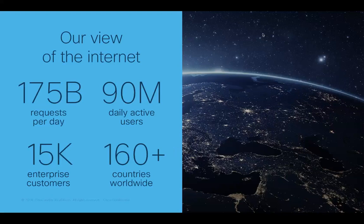You may be wondering what makes Umbrella's threat intelligence so powerful and how we're able to proactively identify threats. One key factor is that our view of the internet is like no other security provider. The Umbrella Global Network includes 30 data centers around the world that resolve over 175 billion DNS requests for more than 90 million users across over 160 countries every day. We also peer with over 800 of the top internet service providers and content delivery networks to exchange BGP routes and ensure we're routing requests efficiently. Not only do we have this massive amount of data, but it's also very diverse — not just from a single geography or a single protocol — which enables us to offer unprecedented insight into staged and launched attacks.